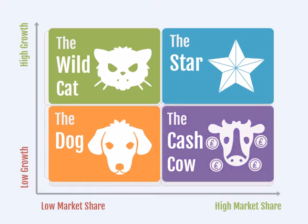In the bottom left-hand quadrant are the dogs. These are organisations or products that have a low market share and operate within a market that has little growth. The dogs are likely to be a cash drain and usually consume management time. They are candidates for removal or divestment.